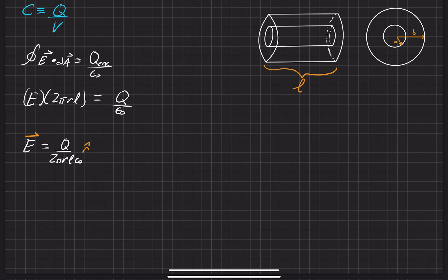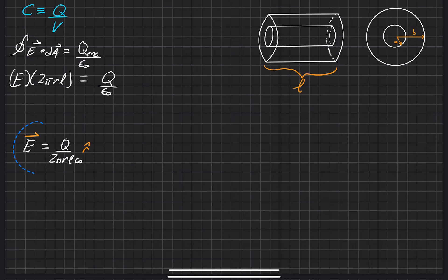Now we can use this electric field to find the potential, electric potential. Let me make some room. I'm going to scoot these all up. Continuing down right here to find the potential. So the potential is defined as V_B minus V_A.